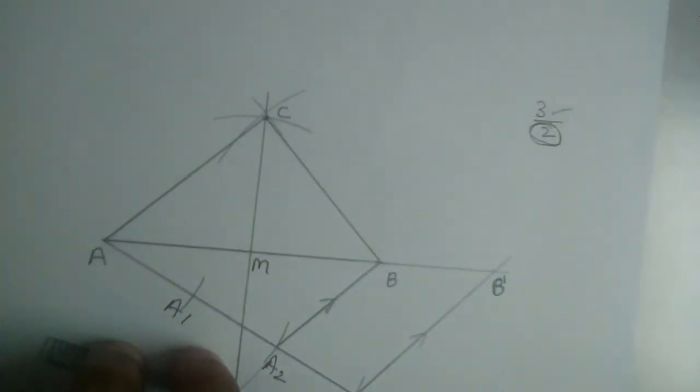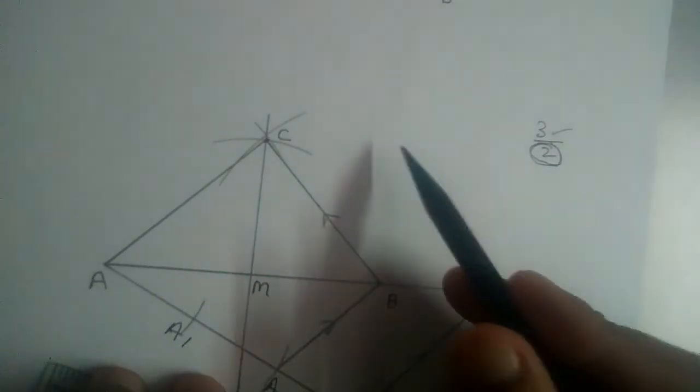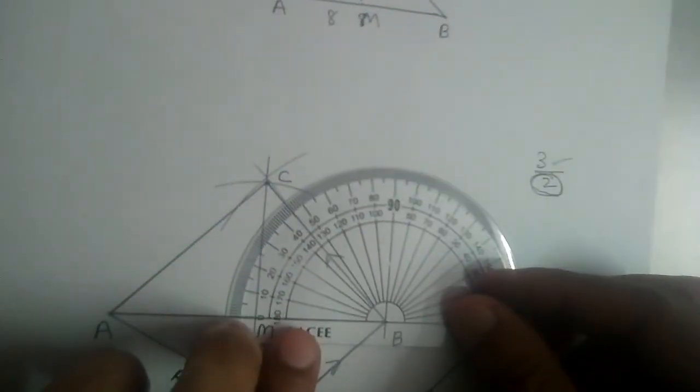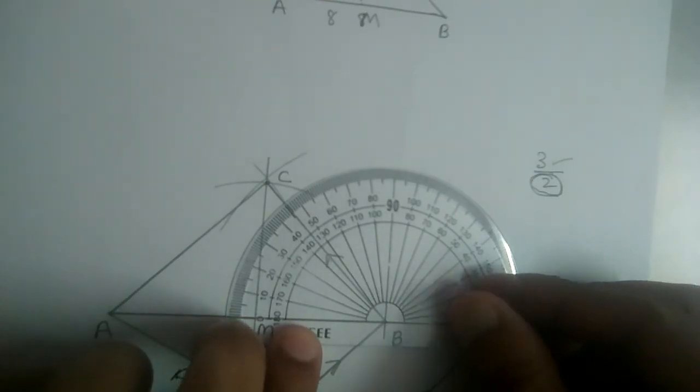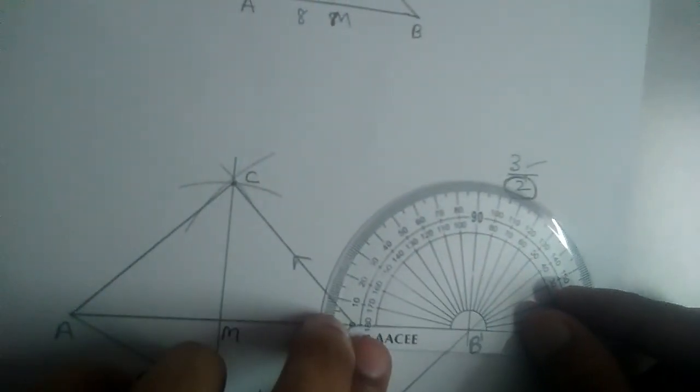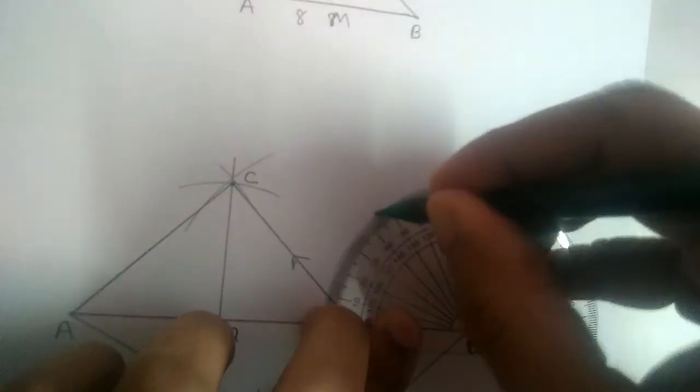Now we should draw a parallel line to BC from B dash. So let us measure the angle again here. It is 46 approximately. So from B dash also we should mark 46 degrees angle.